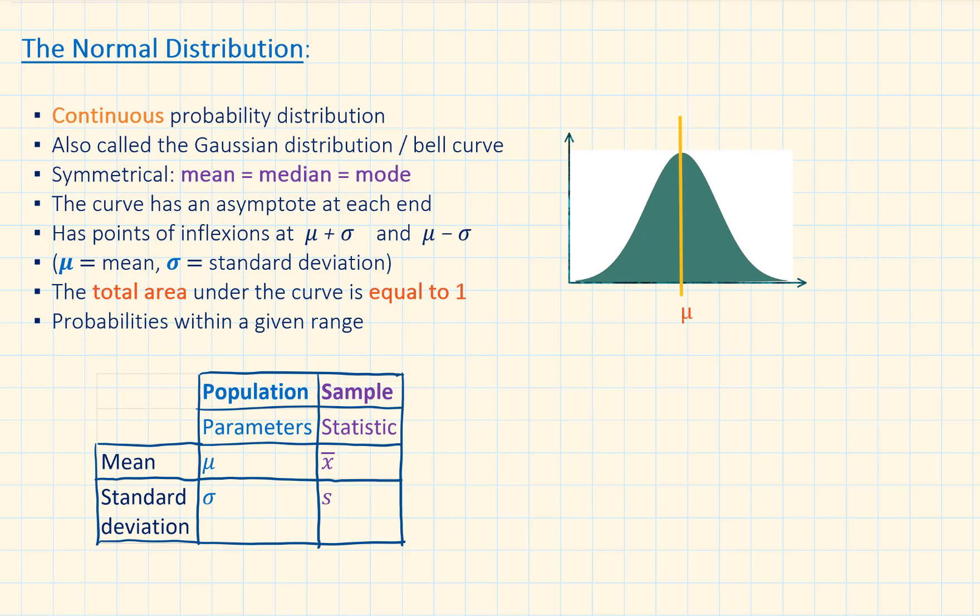The normal distribution is a continuous probability distribution. It can be used to model many naturally occurring characteristics, such as heights of people within a given population, weights, time, blood pressure, scientific measurements, and so on.